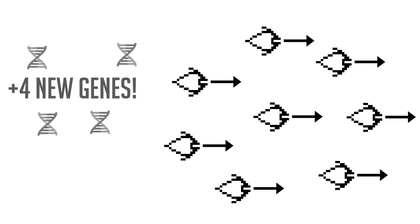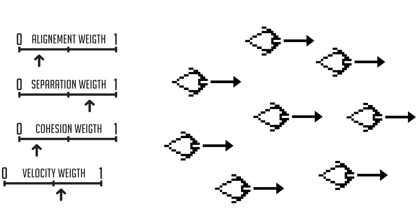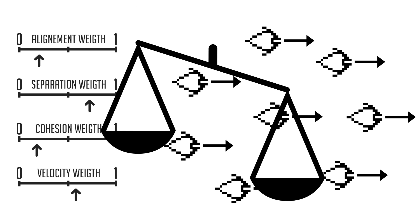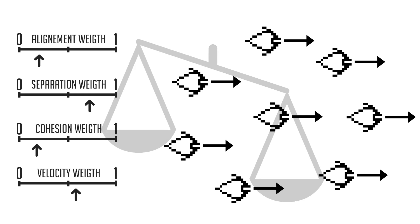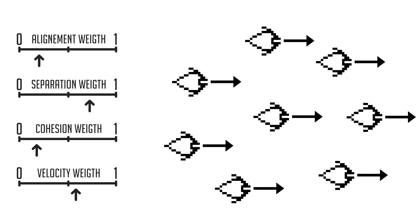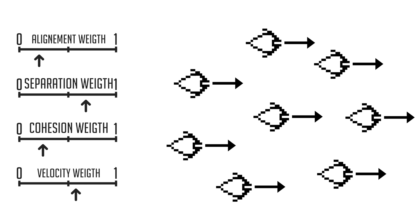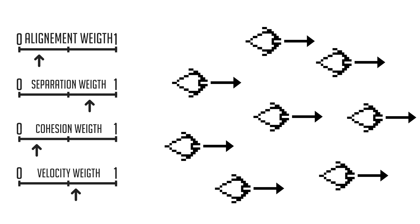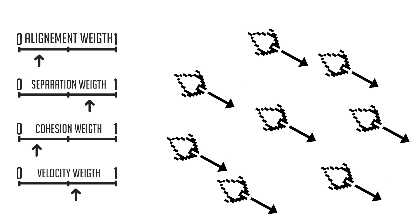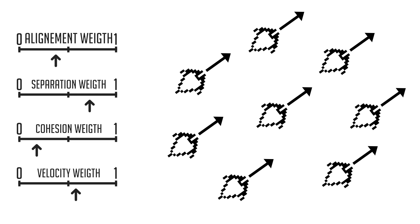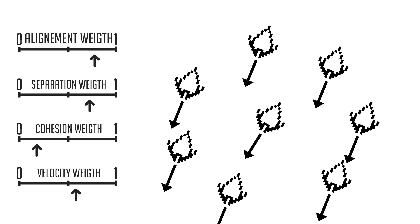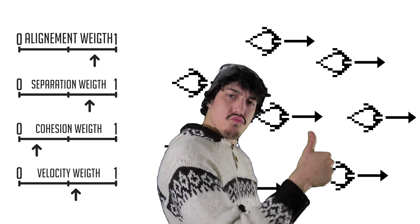But we don't have time for that. I also gave the Bibits a few new genes to control the ratio by which the rules are applied to tune the resulting behavior. As an example, the ratio between the separation weight and the cohesion weight will result in denser herds. Also, a higher relative alignment rule would result in faster convergence of the herd in a particular direction. You get the idea.